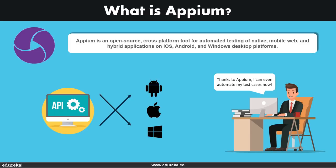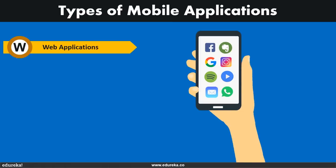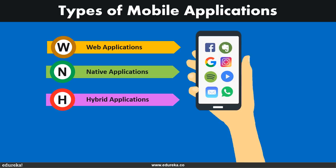Currently, Appium with its single API allows us to test applications for Android, iOS, and Windows OS — meaning Windows 10, 7, and 8 and the applications built for them. So basically it's one tool for testing various applications, whether native, hybrid, or web-based. Our character Bob is really happy that he can now automate all his test cases and save a bunch of time doing much more productive stuff.